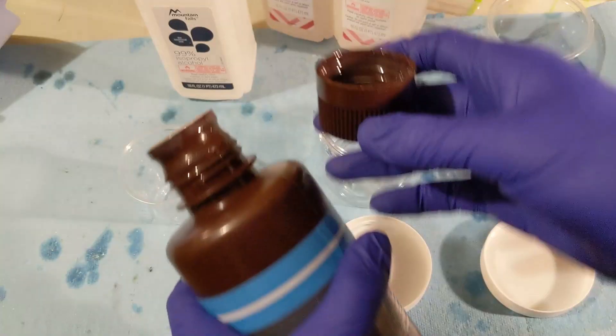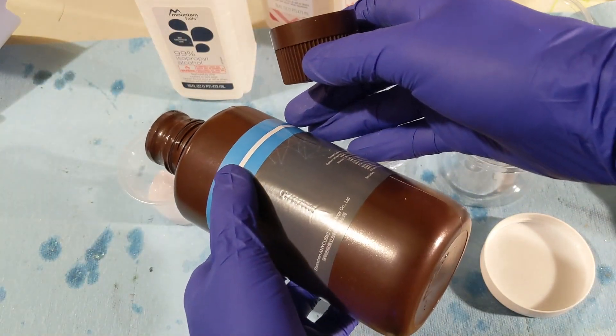And then I will swish it around while spinning it to make sure that I get all of the sides. And then I'm just going to pour that into some cups so that we can use for our other experiment of filtering the alcohol.